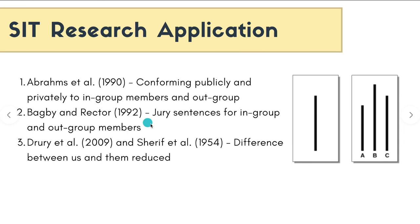Bagby and Rectors investigated jury sentences for in-group and out-group members. This research is highly applicable to real-life situations in the sense that similar behaviors are seen towards minority groups in court proceedings and also in law enforcement. What they found was that when the defendant was part of the in-group of the jury, they tended to give shorter sentences than when the defendant was from an out-group. They also found that when the offense of the out-group member was against one of their in-group members, they were even harsher with the sentences — in a way to protect their in-group.